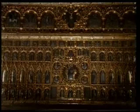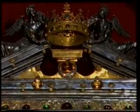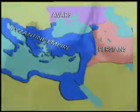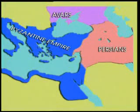Not only the Persians, but also Avars, Slavs and Lombards posed serious threats to the Byzantine Empire. Emperor Heraclius had ordered the gold and silver in churches to be melted and turned into money in order to meet the expenses of the army.